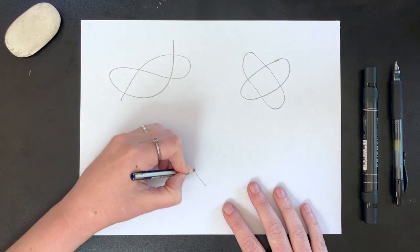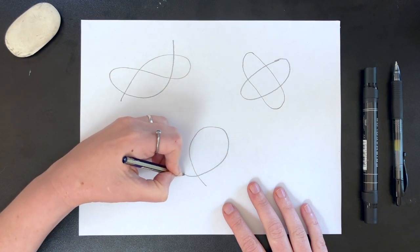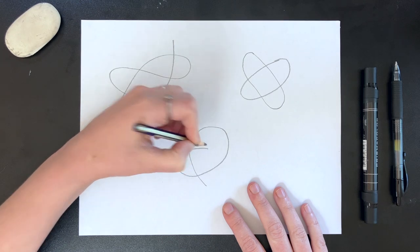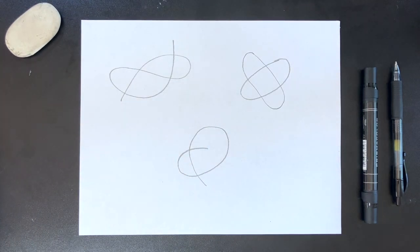On a blank page with a pencil, lightly draw some loose scribbles. You want lines to cross in multiple places, but it will be easier if your lines are not too cramped on the page. Finish your scribble by joining the end of your line to the beginning or making sure both ends are outside of the scribble.